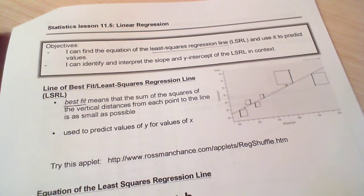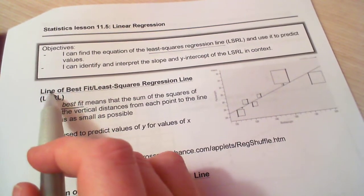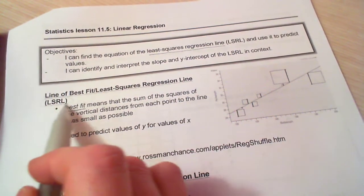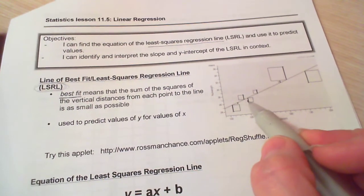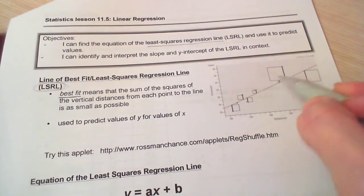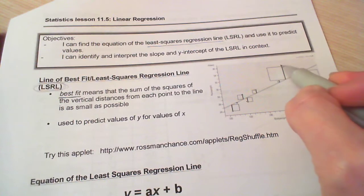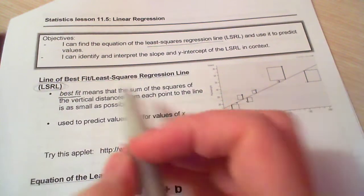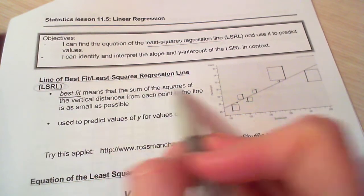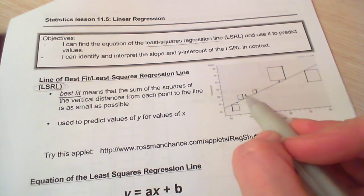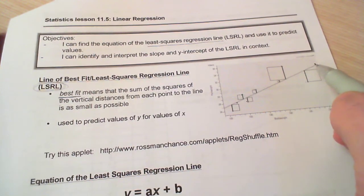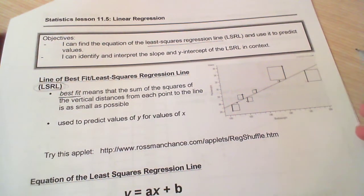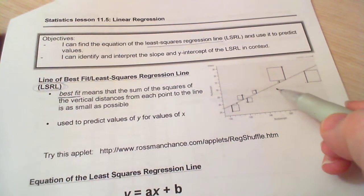We can use it to make predictions. So, line of best fit or least squares regression line is abbreviated LSRL. Best fit means this is how the line is calculated - if we have all these scatter plot dots, it puts a line through the scatter plots to try to minimize the vertical distance from each point. The sum of the squares of the vertical distance from each point to this line is as small as it can be. So it's putting a line through all the points so it's as close as possible to each point.